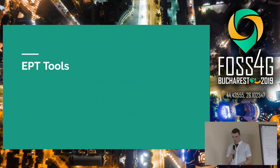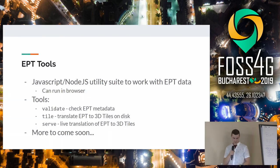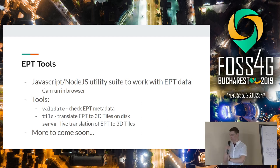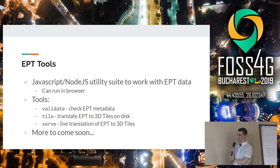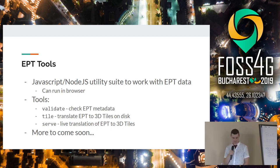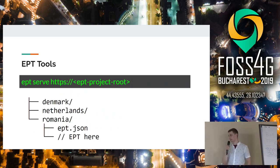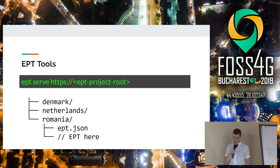I've been working on a new project called EPT Tools — a JavaScript library that can run in the browser or in Node.js with tools to work with EPT data. Right now there are only three tools: Validate, to check metadata and make sure it looks good; a tile command that translates EPT to 3D Tiles as a one-time transformation; and perhaps more interesting, a live translation of EPT to 3D Tiles. You just serve an EPT project route, point Cesium at that route, and Cesium makes 3D Tiles requests that are automatically converted from EPT by the server.